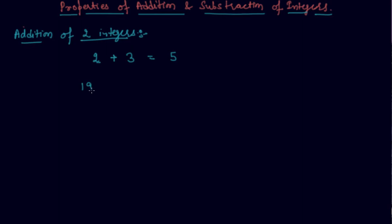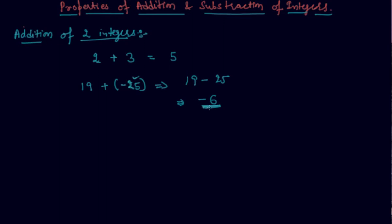Let me give you some more examples on addition of integers. If I write 19 plus minus 25, I can write this as 19 minus 25, and I will get minus 6. The value of minus 25 is larger in magnitude than 19, so we get 25 minus 19 which is 6, and the sign of 25 is minus, so we get minus 6.